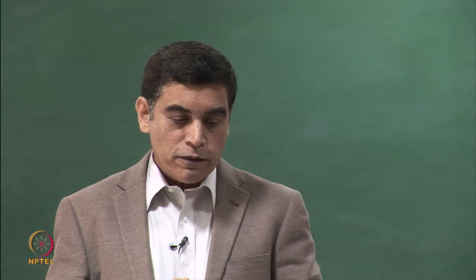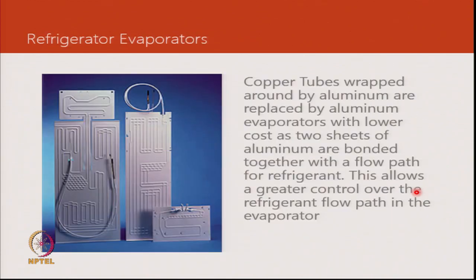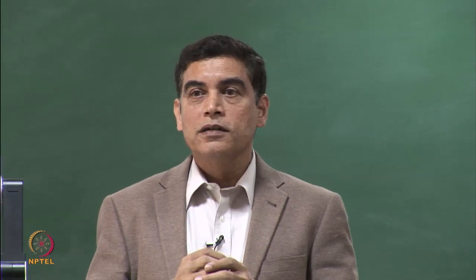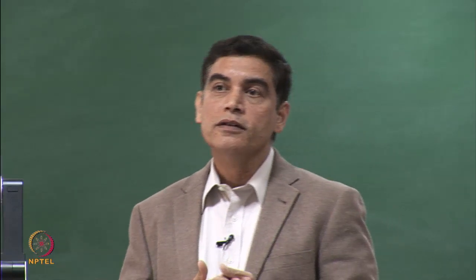In frost-free refrigerators we have something different. Initially, domestic refrigerators used copper tubes wrapped with aluminium to form the evaporator. Now, because of rising copper costs and available technology, two sheets of aluminium are bonded together with refrigerant paths created by expanding the metal — forming lower-cost, more effective, and more reliable roll-bond evaporators. This is what is found inside refrigerators manufactured today.